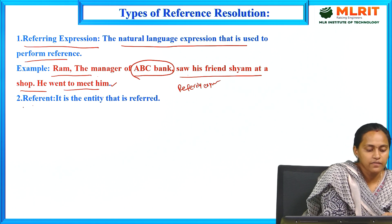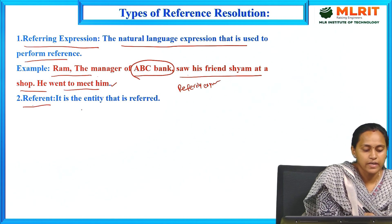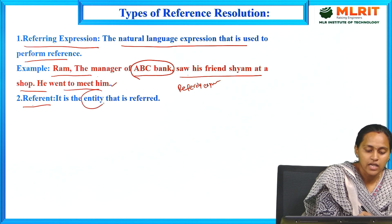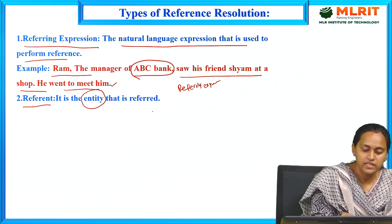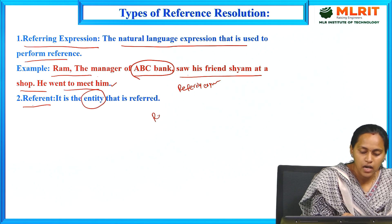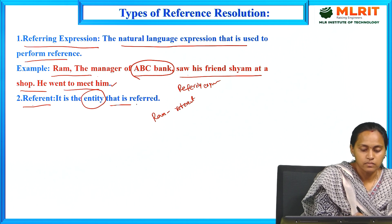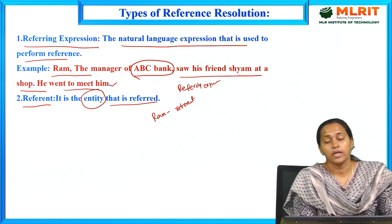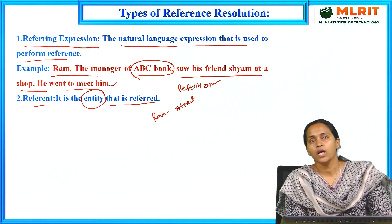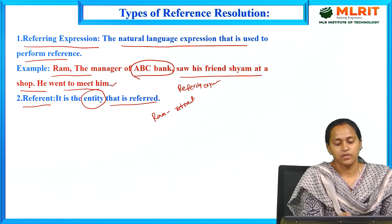The second type is the referent — it is the entity that is referred to. In the above example, Ram is the referent, meaning it is the entity being referred to.